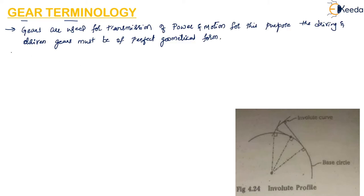Gears consist of two parts: the driving and the driven gear wheels. If we want to have perfect or effective transmission of power or motion through the gears, we have to ensure that these gears are made of perfect geometrical form. So we have to manufacture the gears precisely and they should be measured accurately.